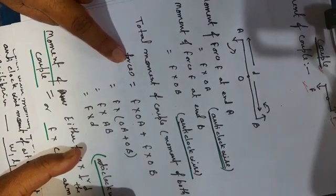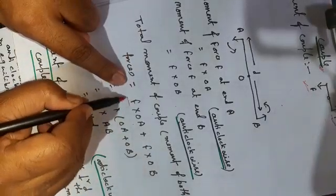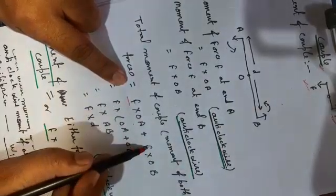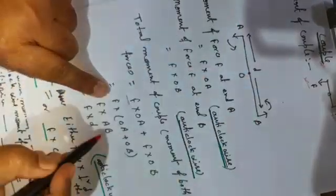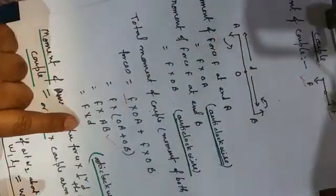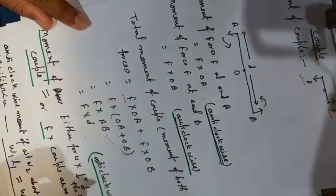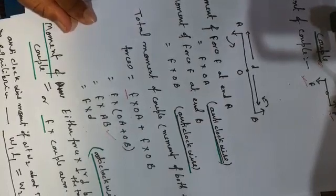And if we want to calculate the total moment of couple, in that case, the moment of both the forces will be equal to individual force F because both are equal. That is F into OA plus F into OB. Taking F as common, I have now OA plus OB. And you see OA plus OB gives you AB. Suppose AB is D. Then the total moment of couple is equal to F into D, which is anticlockwise in nature.